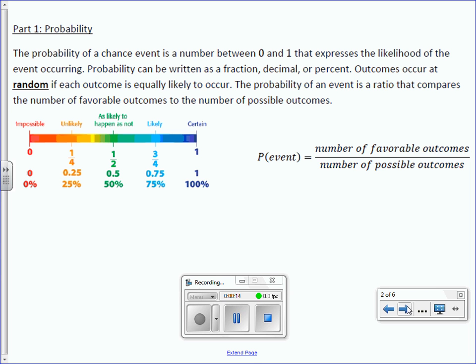The probability of a chance event is a number between 0 and 1 that expresses the likelihood of the event occurring. Probability can be written as a fraction, decimal, or percent. Outcomes occur at random if each outcome is equally likely to occur. The probability of an event is a ratio that compares the number of favorable outcomes to the number of possible outcomes. So what you want over the total.